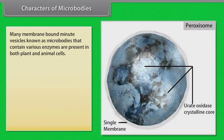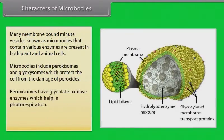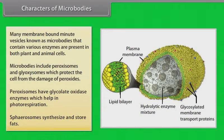Characters of microbodies: Many membrane-bound minute vesicles known as microbodies contain various enzymes and are present in both plant and animal cells. Microbodies include peroxisomes and glyoxysomes, which protect the cell from damage by peroxides. Peroxisomes have glycolate oxidase enzyme, which helps in photorespiration. Spherosomes synthesize and store fat.